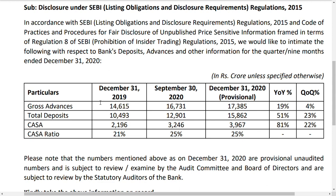CASA — which stands for Current Account and Savings Account — has jumped from around 2,196 crores to 3,967 crores, essentially from about 2,000 crores to 4,000 crores. That represents around 81 percent year-on-year growth and 20 percent quarter-on-quarter growth. So both deposits and CASA have grown significantly.